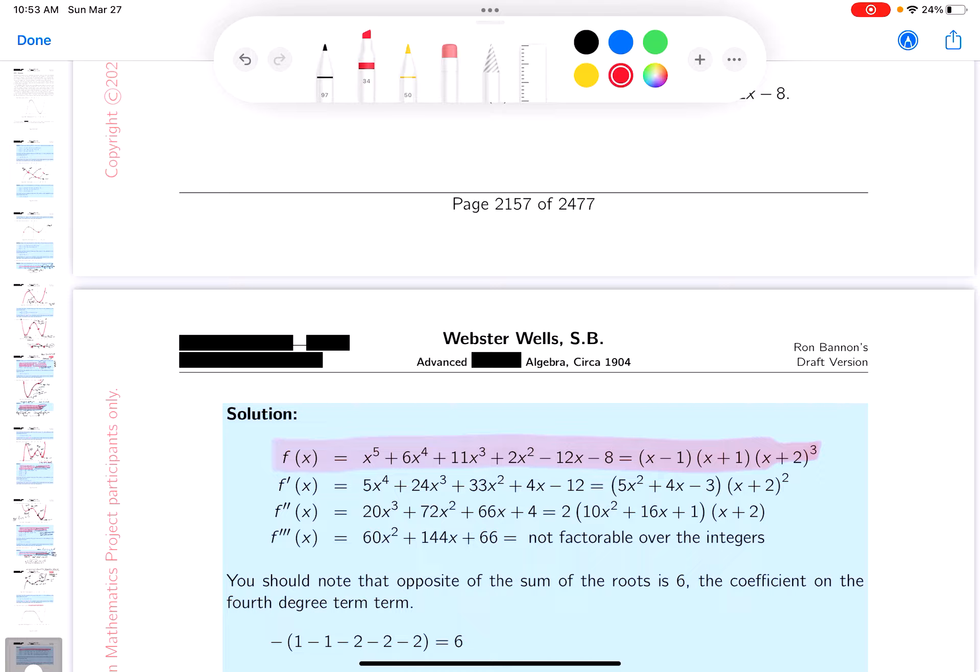The first derivative, I got to be careful here. By the way, I mean by careful, last problem I made a mistake. I'm not sure how that crept in there, but it did. Let me just take a look at that: 5x^4 + 24x^3 + 33x^2 + 4x - 12.